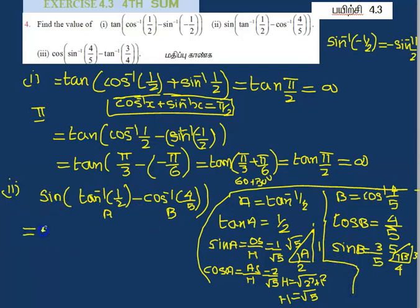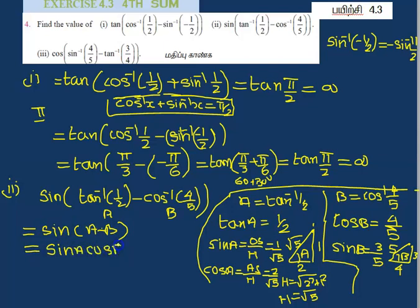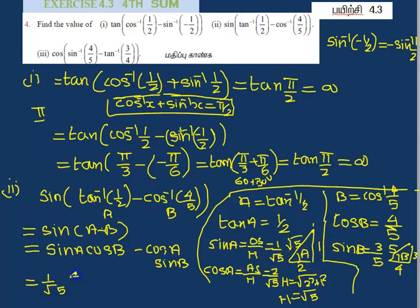Now we replace using the formula sin A cos B minus cos A sin B. Sin A equals 1 by root 5, cos B equals 4 by 5, minus cos A equals 2 by root 5, sin B equals 3 by 5.